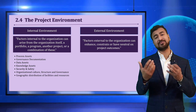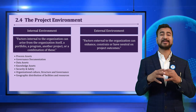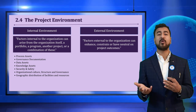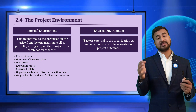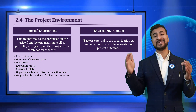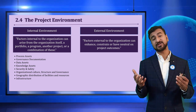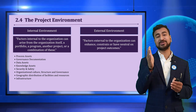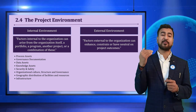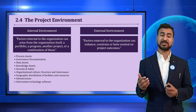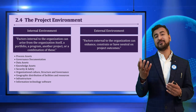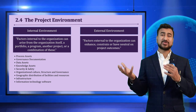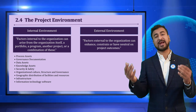Geographical distribution and facilities of resources: nowadays in global conglomerates, teams are scattered across the globe — sometimes co-located, sometimes distributed, working from home. Telecommunication and other infrastructure help facilitate employees. Infrastructure covers your office setup, civil buildings, cafeteria, furniture, and other facilities provided to staff. Information technology software includes tools like ERP, SAP, and project management software like Trello, which help you govern and manage projects, programs, and portfolios efficiently.